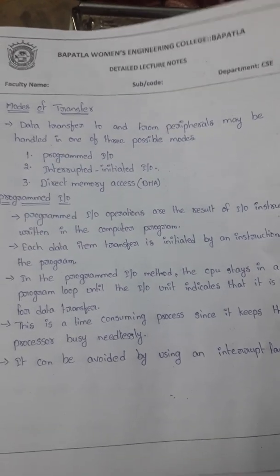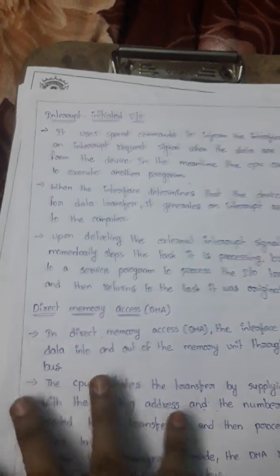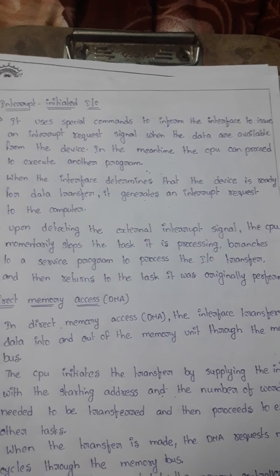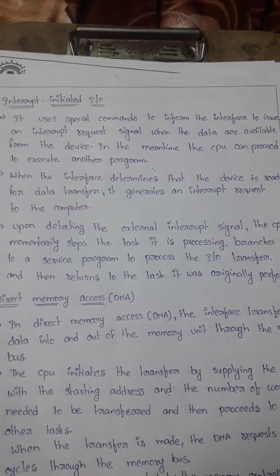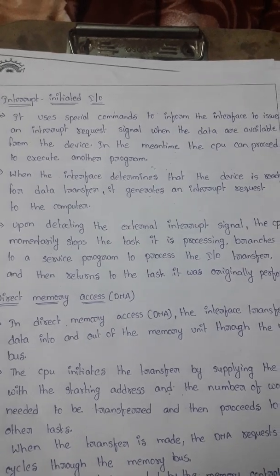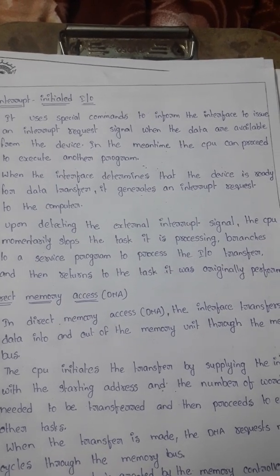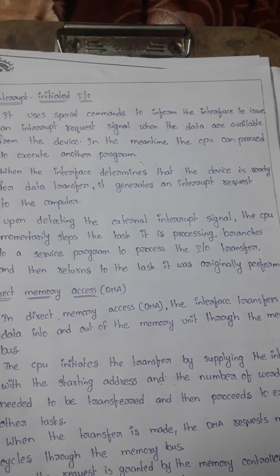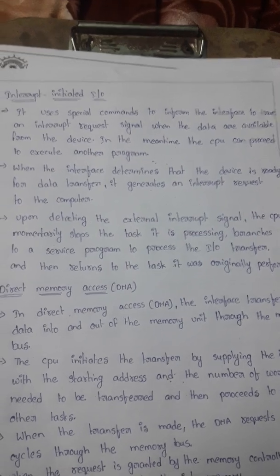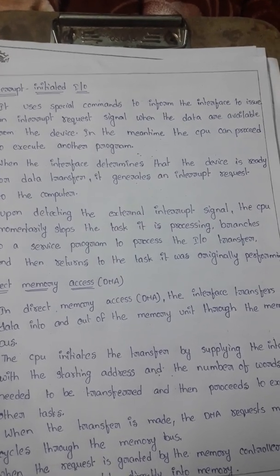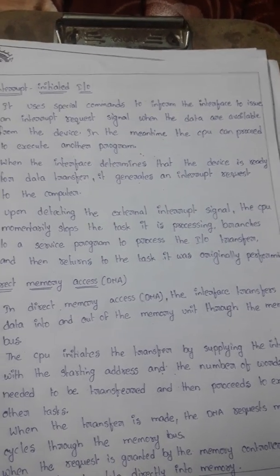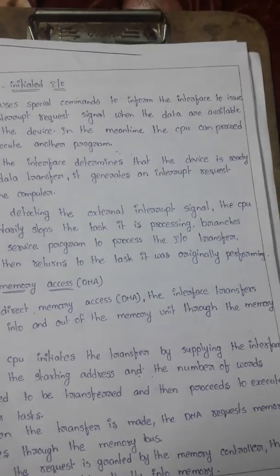The second mode of data transfer is interrupt-initiated I/O. In this mode, special commands are used to inform the interface to issue an interrupt request signal when data is available from the device. In the meantime, the CPU can proceed to execute another program. When the data is ready, the interface sends an interrupt signal, and the CPU stops whatever work it was doing and services the I/O request.